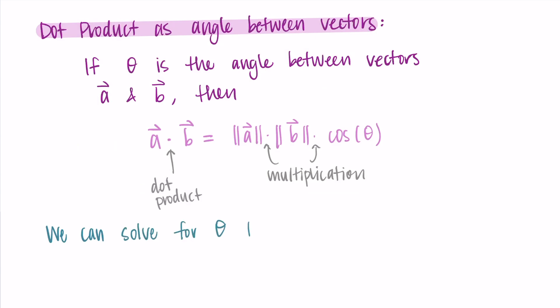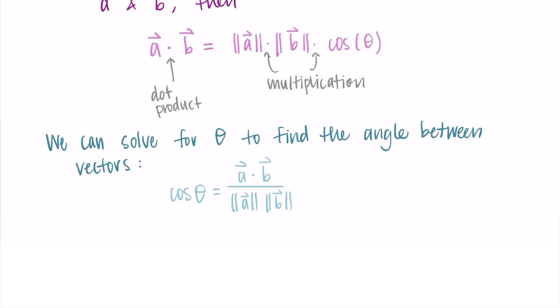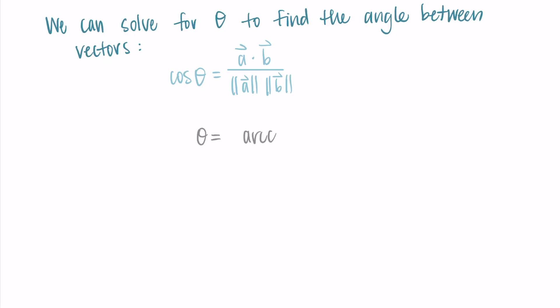The power of this formula is that we can now solve for theta to find the angle between the vectors. We can write that cosine of theta equals a·b divided by the magnitude of a times the magnitude of b. Taking the inverse cosine, theta equals the arc cosine of a·b divided by the magnitude of a times the magnitude of b.